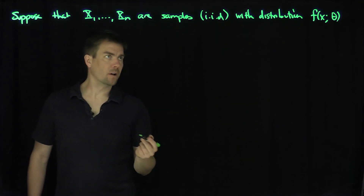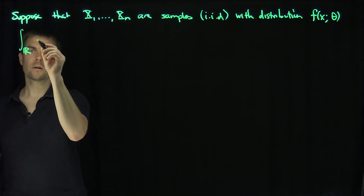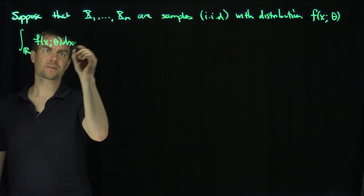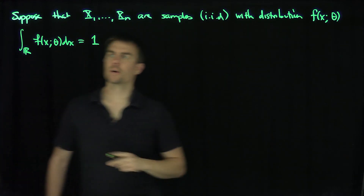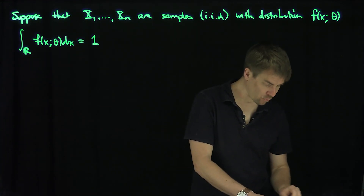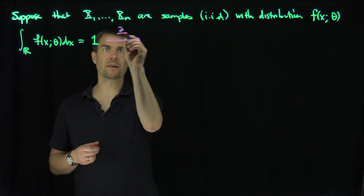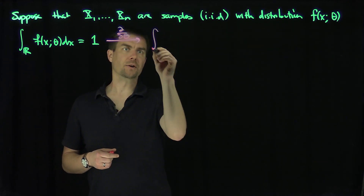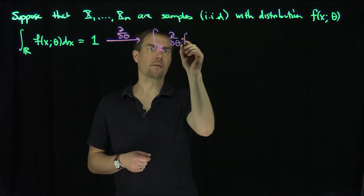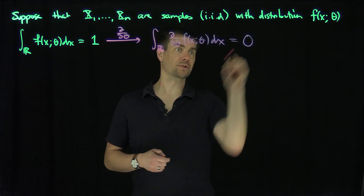What we want to do is notice that the integral over R of f of x and theta dx is equal to 1. Since this is 1 for all values of theta, I can take the partial derivative with respect to theta under appropriate regularity conditions. So the theta derivative gives us the integral over R of the partial with respect to theta of f of x and theta dx, which is equal to 0.